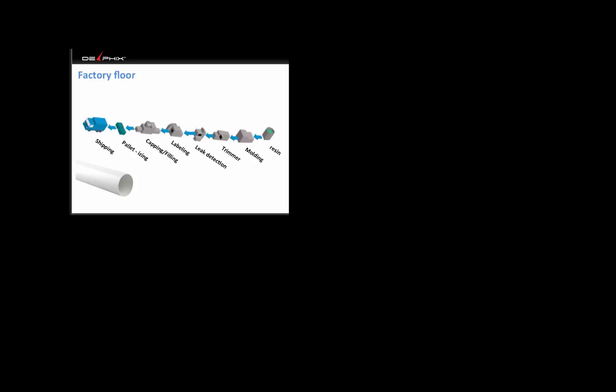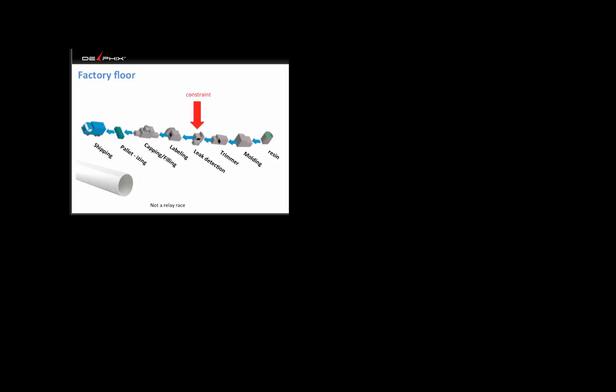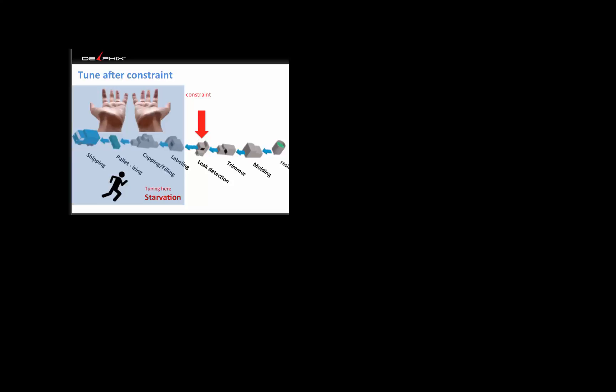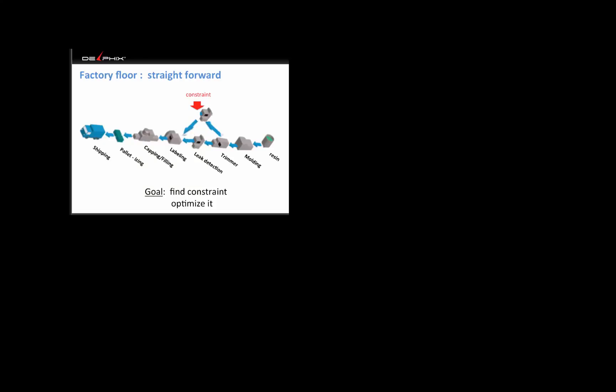I'm a computer guy, but this is factory floor thinking. If I had a factory with orders coming in faster than I can produce, and I see guys kicking back at some stations, I'd make everybody work 100%. But the theory of constraints says that's not a good thing. If you have a bottleneck — say the leak detection station — tuning before it creates a stockpile you have to manage, and tuning after it starves those workers. You need to find the constraint and optimize only that.